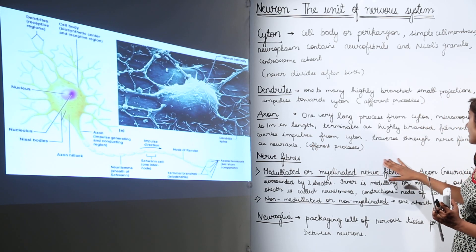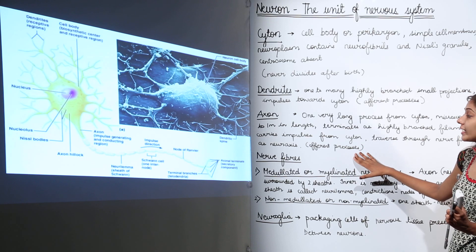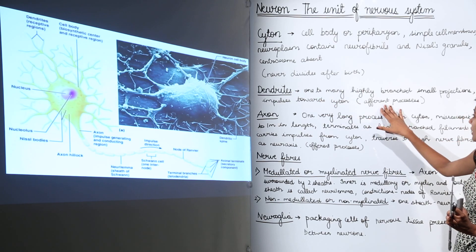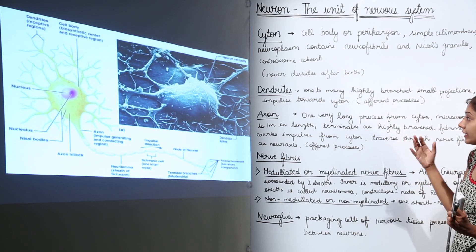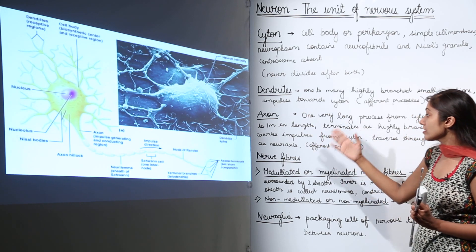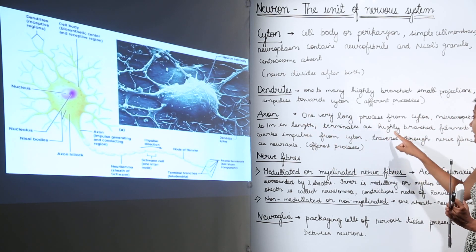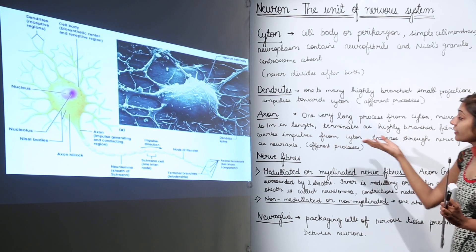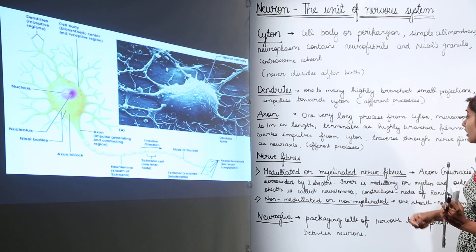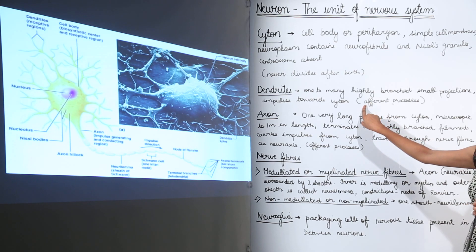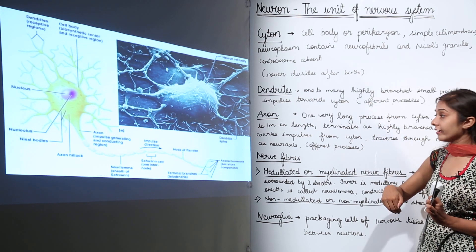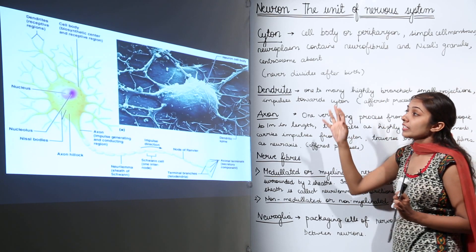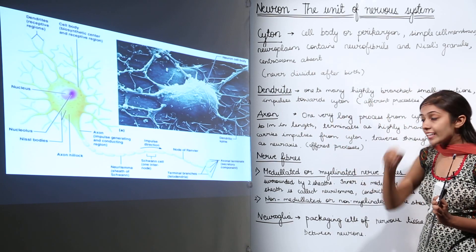The axon is known as efferent processes because dendrites carry impulses towards the cytone, while the axon — terminating into highly branched filaments — carries impulses from the cytone. You can remember: A (afferent/dendrites) comes before E (efferent/axon) alphabetically, showing how impulses travel from dendrite to cytone to axon.